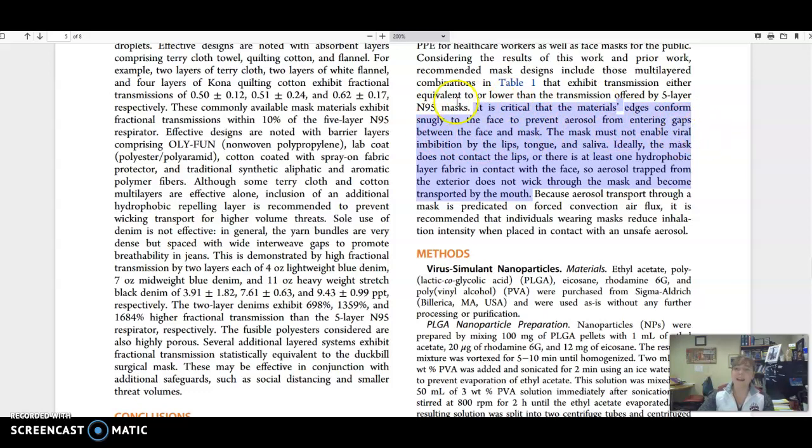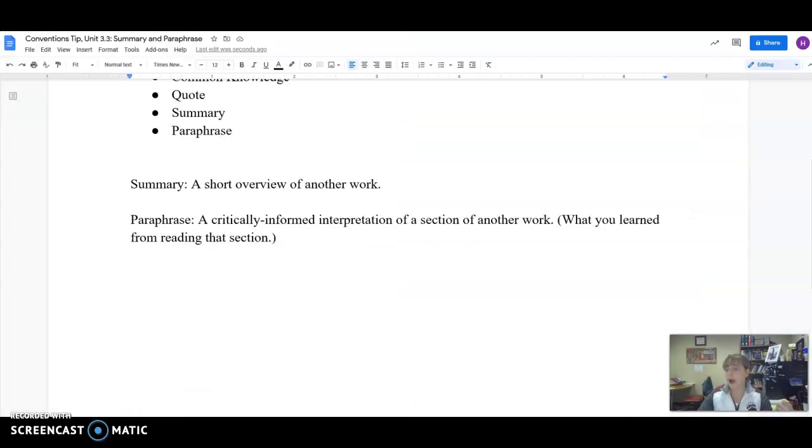The mask must not enable viral imbibition by the lips, tongue, and saliva. Ideally, the mask does not contact the lips or there is at least one hydrophobic layer fabric in contact with the face. So aerosol trapped from the exterior does not wick through the mask and become transported by the mouth. This is a lot of technical stuff, and it's not even necessarily that technical, but they're using very fancy language that I need to break down and explain to my reader. So I need to paraphrase this information.